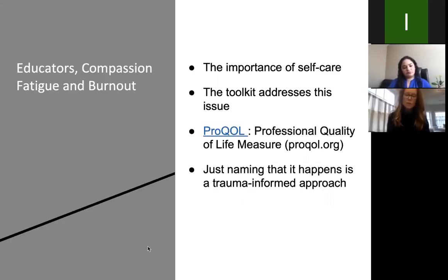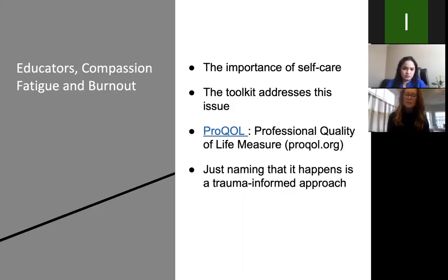Educators can get what we call compassion fatigue — similar to burnout — where those in caring professions like education can lose their compassion because they're exhausted from being in that role. Just naming that educators get compassion fatigue and burned out is a trauma-informed approach in itself, because it acknowledges that this is tough work and that educators need support and education around how to help kids with trauma. There is a tool called ProQOL — the Professional Quality of Life measure — which is a self-assessment for educators looking at their own level of compassion fatigue and burnout as well as areas of strengths, helping them to self-assess where they are and what they need help with.